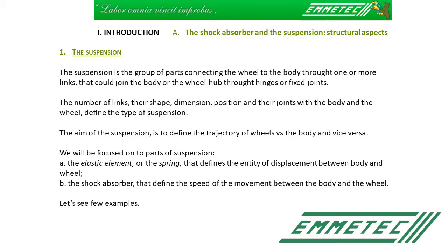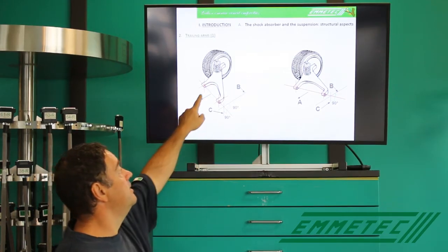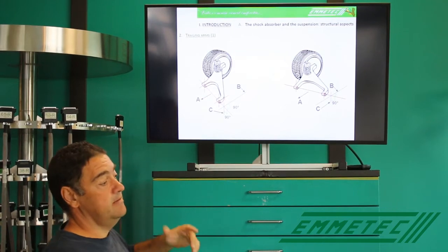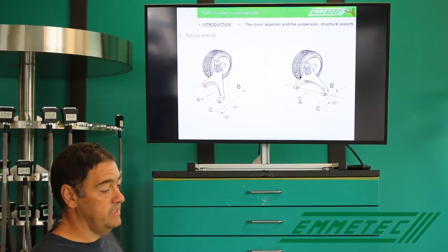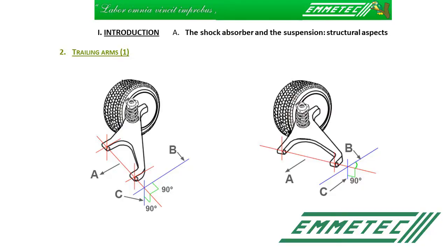The suspension is the group of parts connecting the wheel with the frame of the car and regulating the relative movement of the frame versus the wheel and vice versa. The main components of the suspension are the tire, the wheel, the arc, the spring, different types of spring, the shock absorber, and so on. We will see all of them, and we will see many different types of shock absorbers. This will help us to understand why there are different types of shock absorbers too.